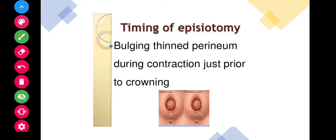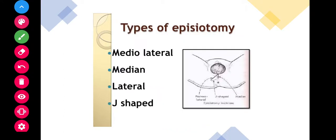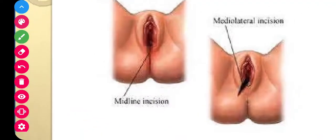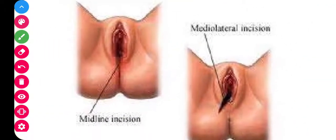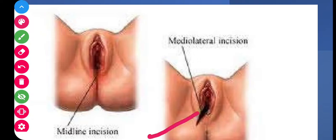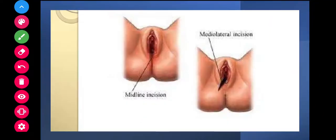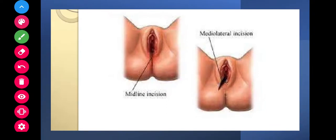Let us talk about the types of episiotomy. There are four types: medial lateral, median, lateral, and J-shaped. This is midline incision, this is medial lateral, this is median, and J-shaped which will be like in a shape of J. I will show.